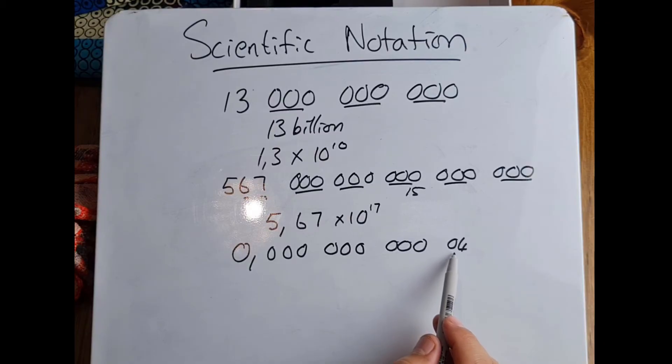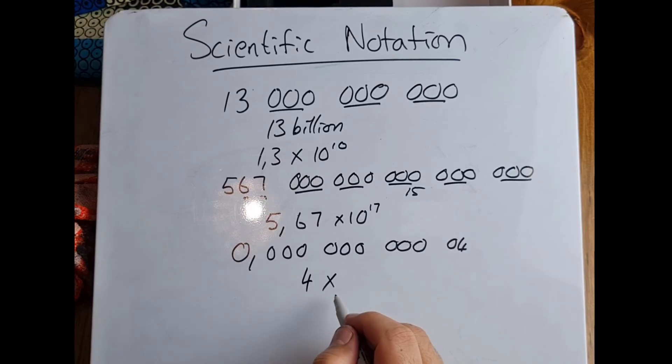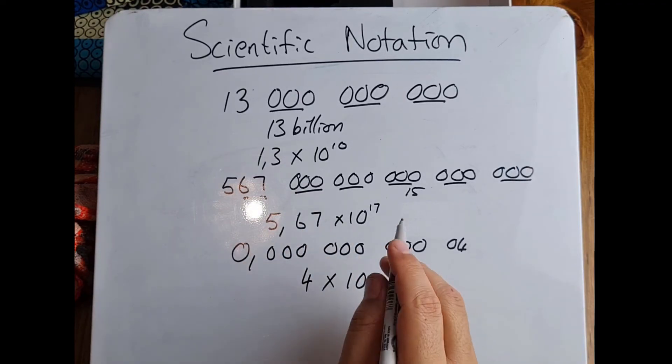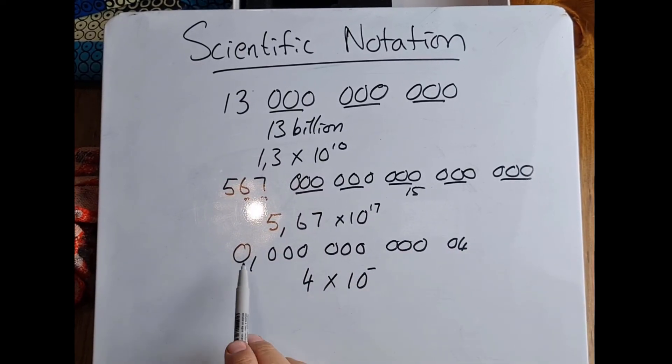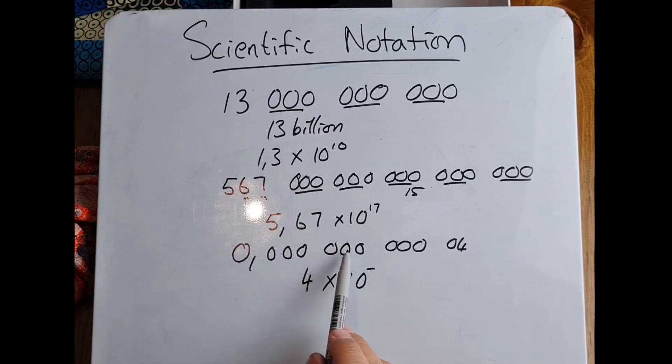So this can be written as 4 multiplied by—again, my base is 10—but this time instead of it being a positive movement, it is a negative movement. Right, I'm moving the four all the way down, so it's going to be negative. And why is it 11? One, two, three, four, five, six, seven, eight, nine, 10, 11.